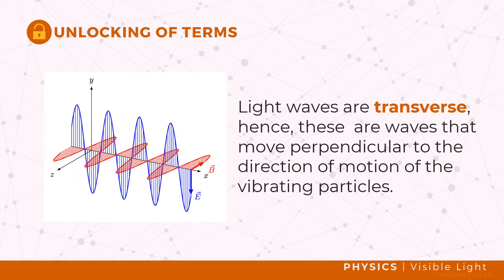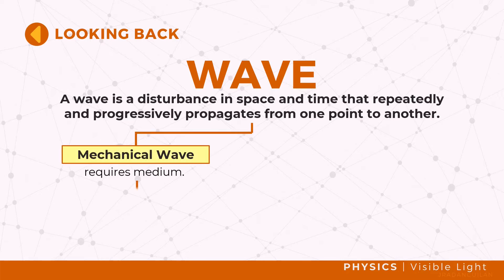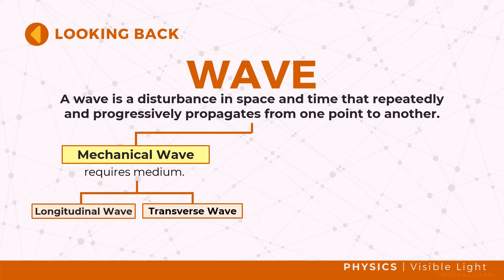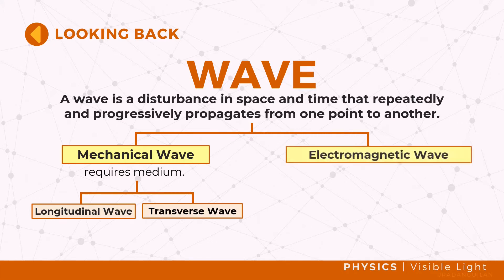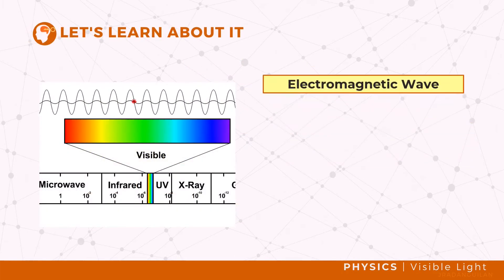In past lessons we can recall that a wave is a disturbance in space and time that repeatedly and progressively propagates from one point to another. Sound is one example of longitudinal mechanical waves, which means that some waves require a medium to travel. Another type of wave is the electromagnetic wave — this type of wave does not require a medium to travel, and one example of this is light.